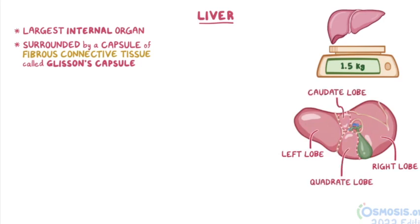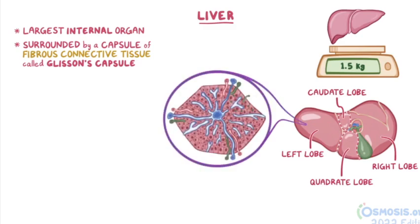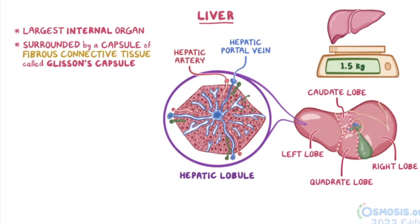The liver parenchyma, or functional tissue of the liver, is organized into thousands of hepatic lobules, which have a dual blood supply that comes from terminal branches of the hepatic portal vein and hepatic artery. The blood then flows through sinusoids, surrounded by hepatocytes, before draining into the lobule's central vein.